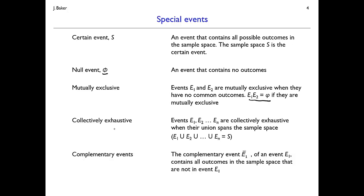Collectively exhaustive events are events whose union spans the sample space. If E1, E2, E3, up through EN have a union equal to the sample space, then E1 through EN are collectively exhaustive — no possible event falls outside all of them. Events can be both mutually exclusive and collectively exhaustive simultaneously, meaning they span the sample space with no overlapping outcomes. Either property, both, or neither can hold at once.